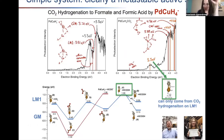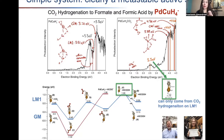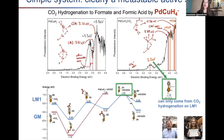Let me show you a very simple baby system — not a real catalyst anyone would use, but interesting because it illustrates that a metastable state could contain the actual active site. The good thing here is that this system is so tiny it only has two minima: the global minimum and what we call LM1. In surface-supported clusters normally there would be hundreds of minima, making it very difficult to experimentally pinpoint the catalytic site.